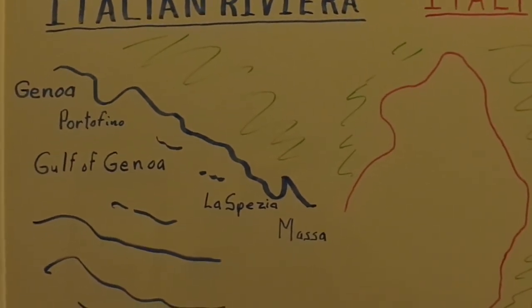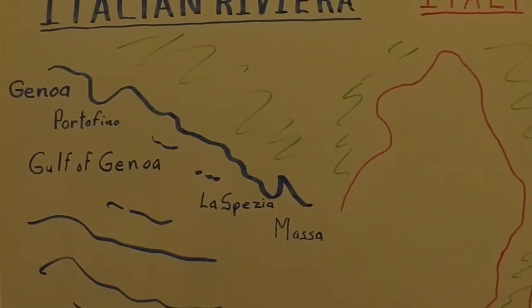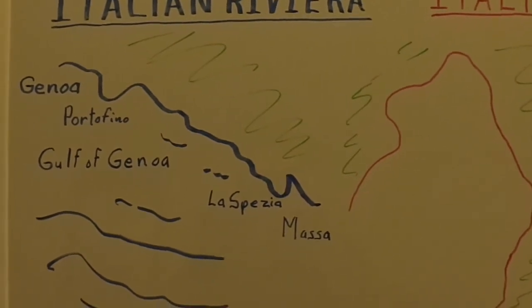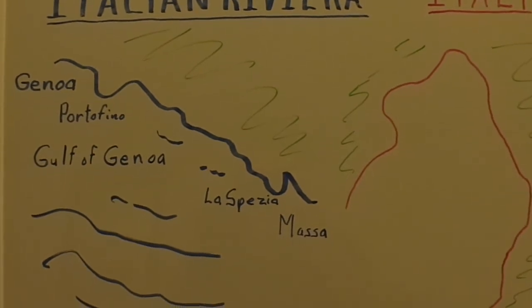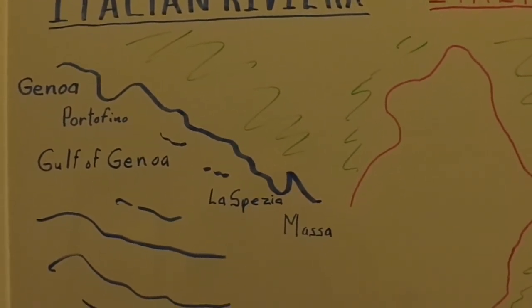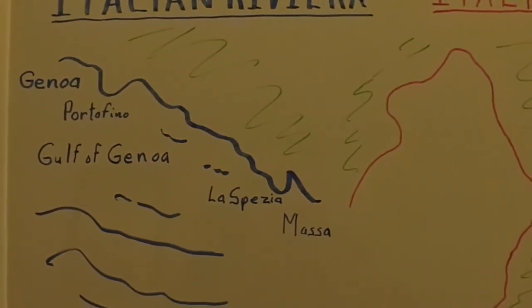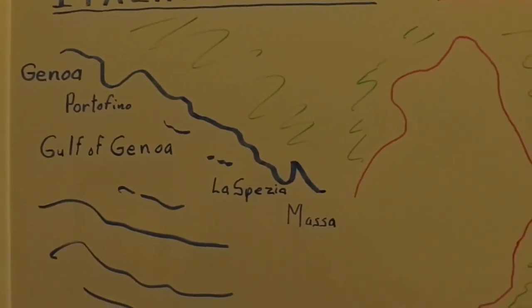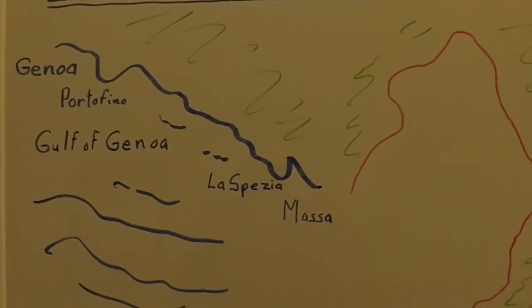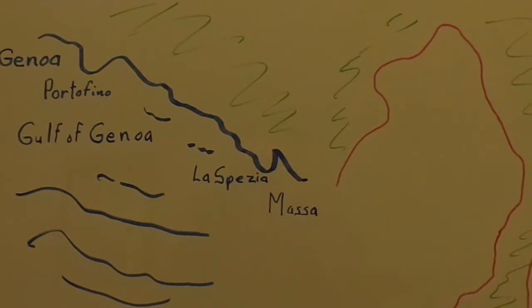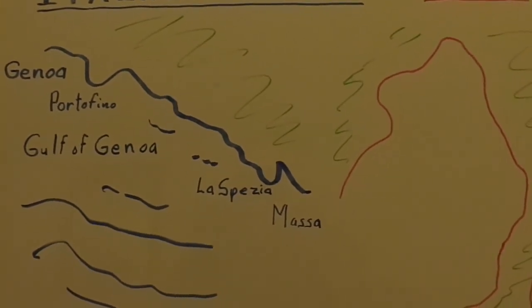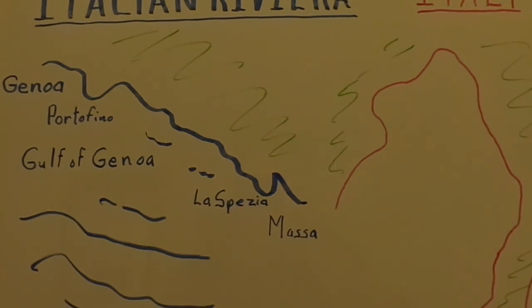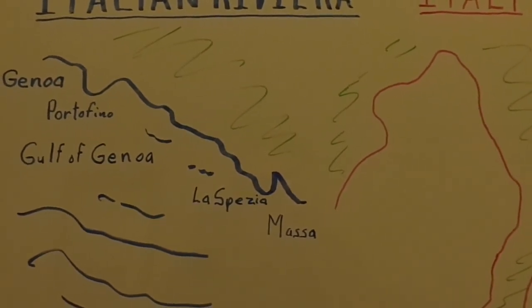Conformality. A conformal projection is one in which proper angular relationships are maintained so that the shape of something on the map is the same as its shape on Earth. It is impossible to depict true shapes for large areas, such as a continent, but they can be approximated, and for small areas the true shape can be shown on a conformal map. All conformal projections have meridians and parallels crossing each other at right angles, just as they do on a globe. The outstanding problem with conformal projections is that the size of an area must be considerably distorted in order to depict the proper shape.